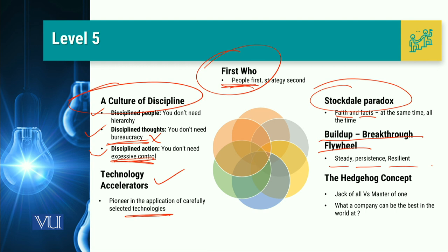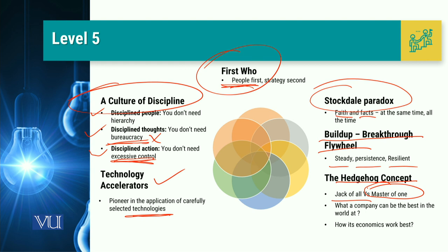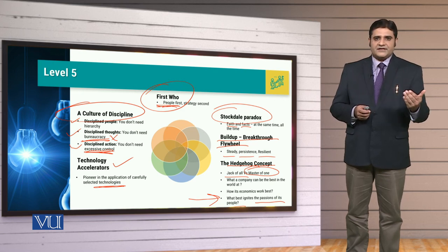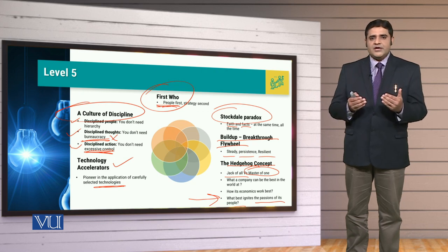The author also discusses the hedgehog concept, making a comparison between the fox and the hedgehog. The fox may be a jack of all trades, but the hedgehog is master of one — and being master of one ensures the hedgehog's survival. Similarly, a company must know what it can be the best in the world at, what economic aspects it can excel in, and what best ignites the passion of its people — because that passion is what creates long-term survival and above-average returns. As a hedgehog-style leader, you can better guide and train your followers because you possess the specific expertise required for success.